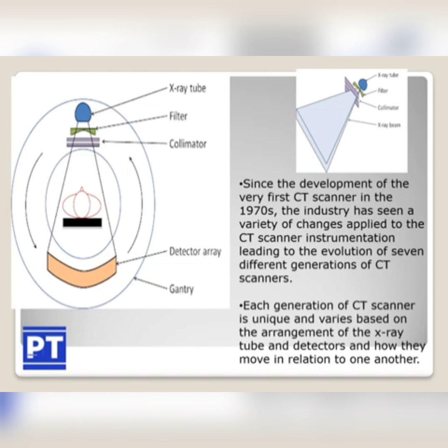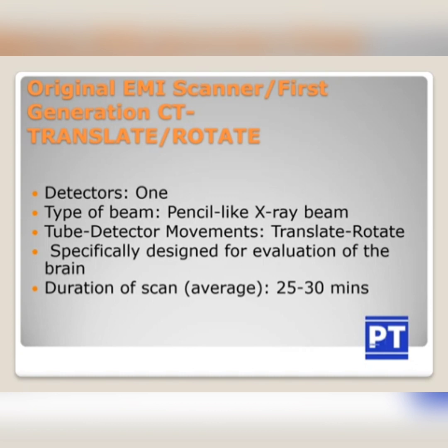We have 7 generations of CT. CT was discovered around 1972 and it was discovered by Godfrey Hounsfield. Moving on to the different generations of CT — the first generation is known as the original EMI scanner or first generation CT. It is otherwise known as translate-rotate CT.